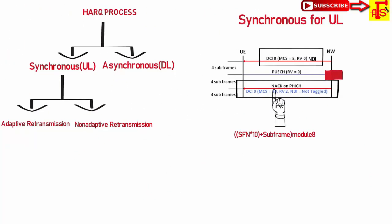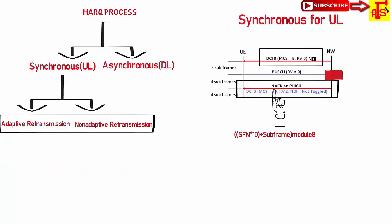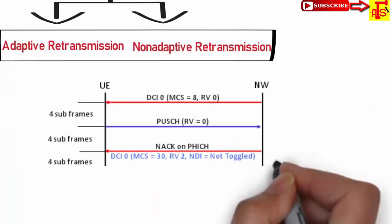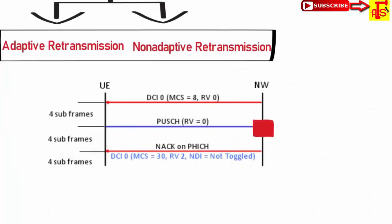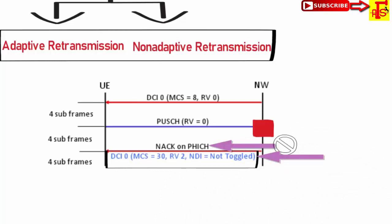In DCI-0, there is an NDI bit and an MCS value. So Synchronous HARQ is of two types: adaptive and non-adaptive. In adaptive retransmission, during retransmission the UE receives DCI-0 with the NDI value. The UE does not care about the HARQ feedback; it just retransmits the data based on DCI-0 information.